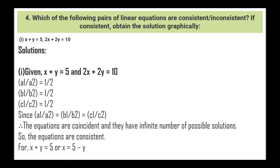Next, question: which of the following pairs of equations are coincident or inconsistent? If coincident, obtain the solution graphically. First: x + y = 5 and 2x + 2y = 10. Here a1/a2 = 1/2, b1/b2 = 1/2, c1/c2 = 1/2. So a1/a2 = b1/b2 = c1/c2. The equations are coincident and they have an infinite number of possible solutions.